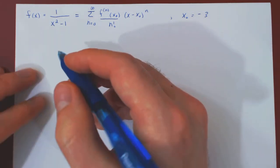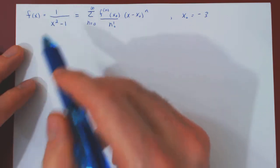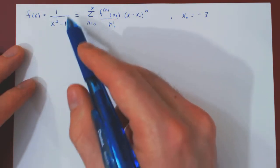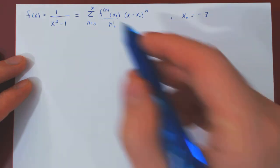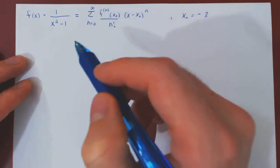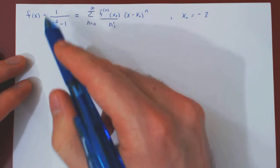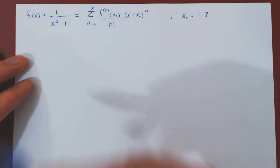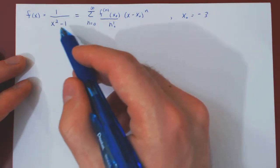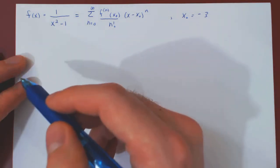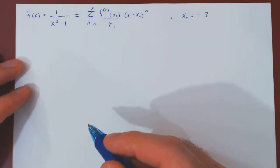There is a simpler solution here, as the function f of x is a simple rational function. So we can find a way around the higher derivatives approach, using instead the idea of decomposing a rational function into a sum of partial fractions, and then our knowledge of geometric series.